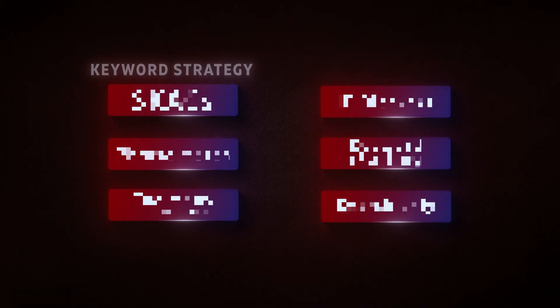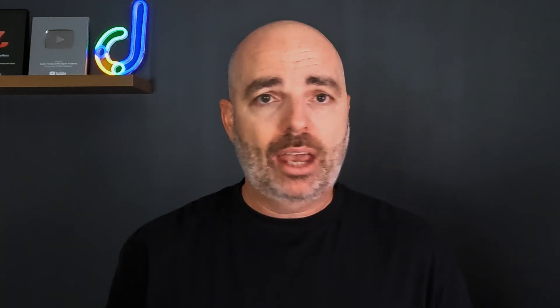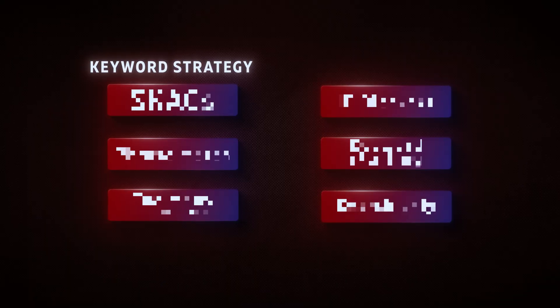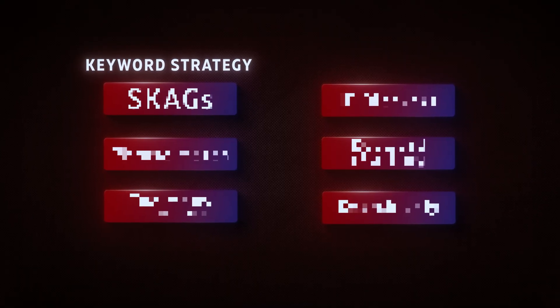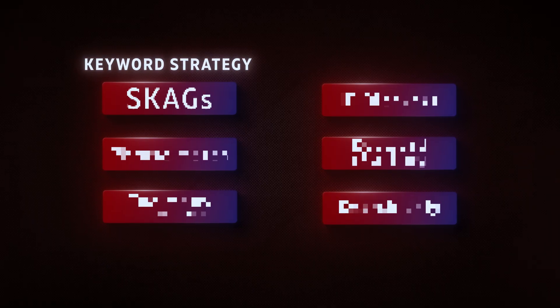There are six strategies we're going to go through, and the first three all have to do with your keyword strategy. The first one — and I thought in 2025 I wouldn't still be saying this because I started saying it back in 2022 — is that SKAGs, single keyword ad groups, they are dead. They've been dead for a long time but they still keep popping up.